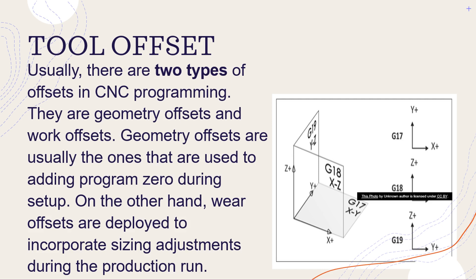Usually, there are two types of offsets in CNC programming: geometry offsets and work offsets. Geometry offsets are usually the ones used for adding program zero during setup. Work offsets, on the other hand, are deployed to incorporate sizing adjustments during the production run.